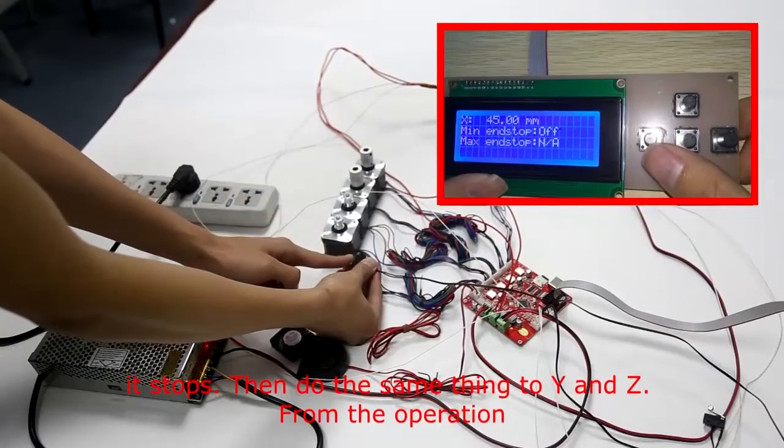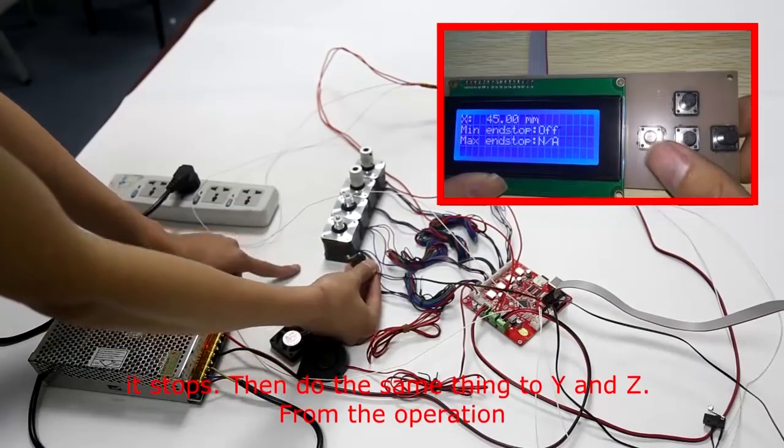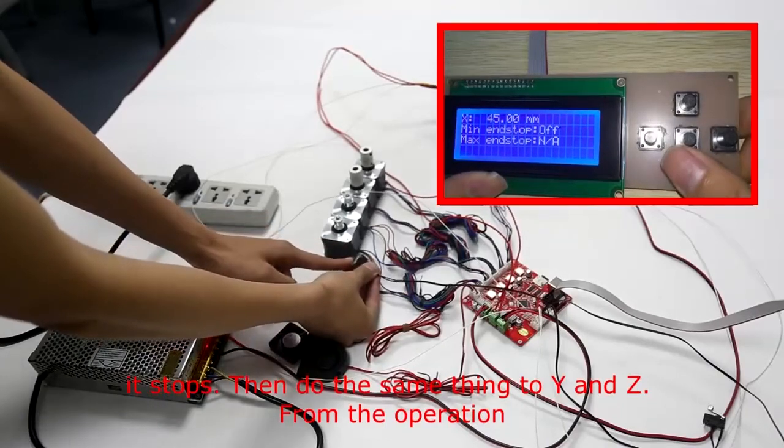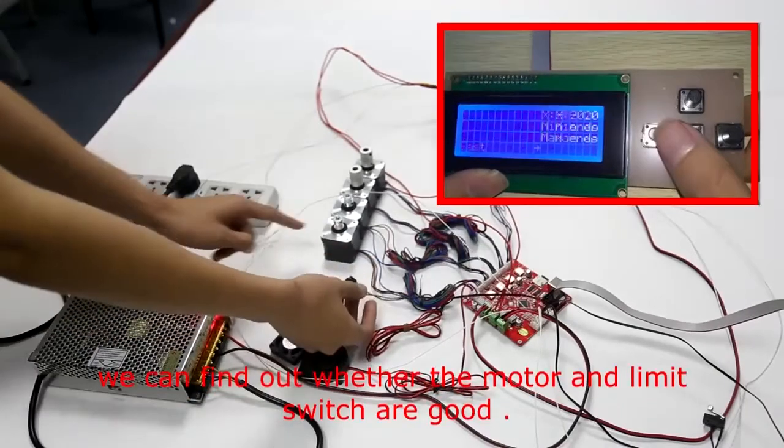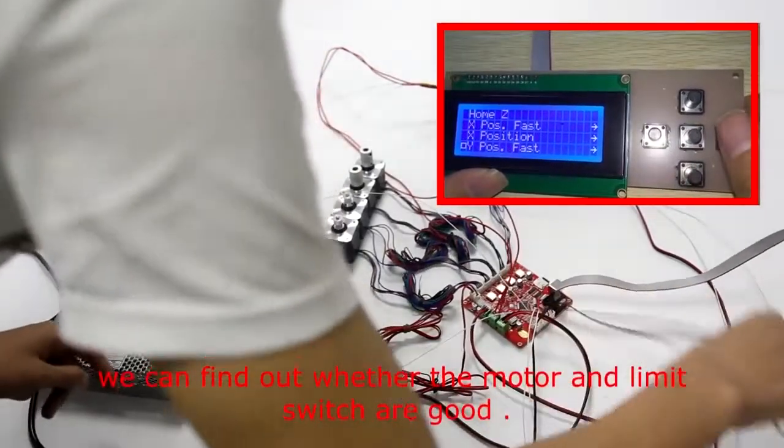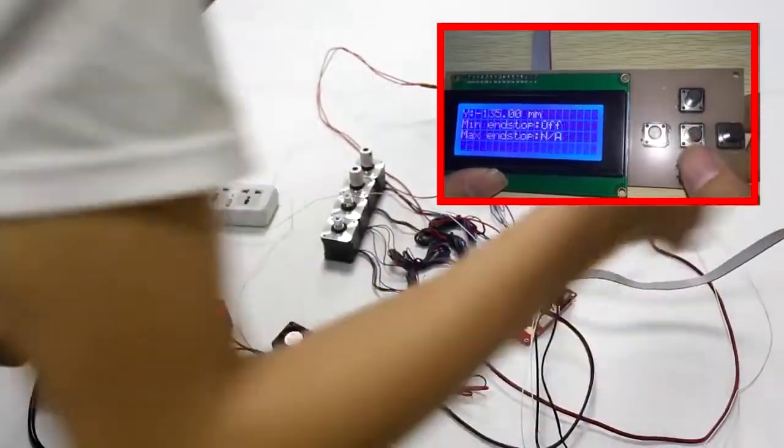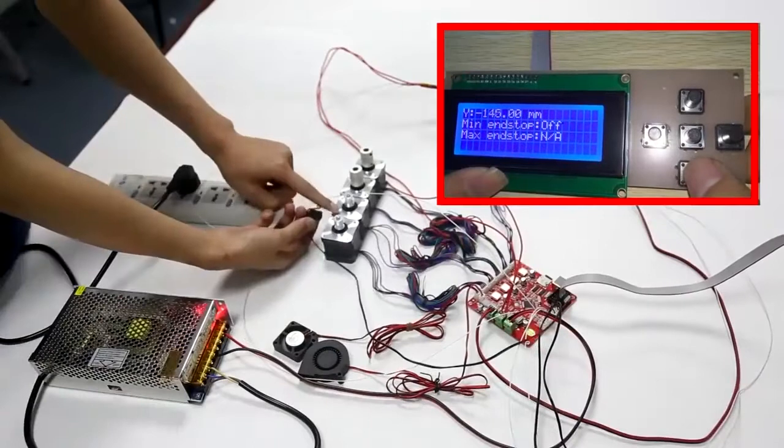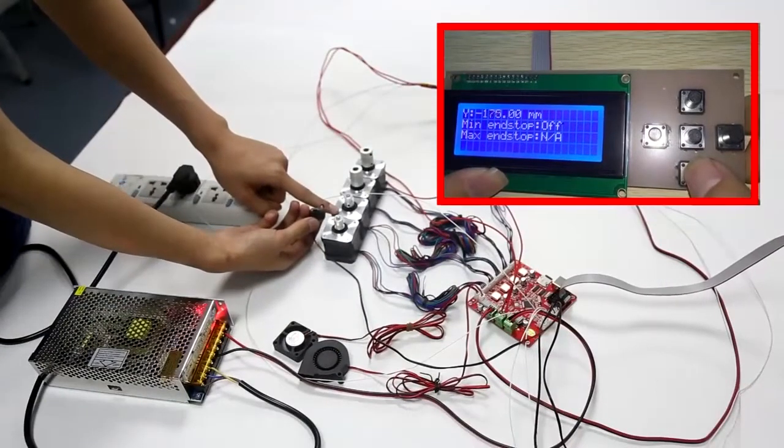Then, do the same thing to Y and Z. From the operation, we can find out whether the motors and limit switches are good. It is important.